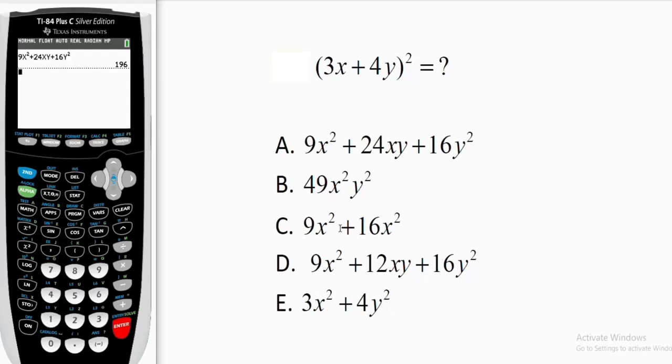196 exactly. So the correct option is option A. This is basically how you can do this fast in your ACT math multiple choice questions. When you see this kind of problem, this is how you can do it.